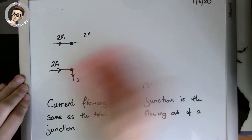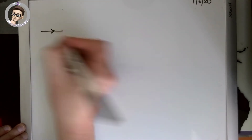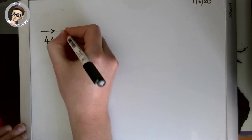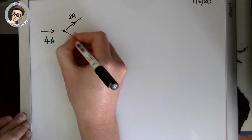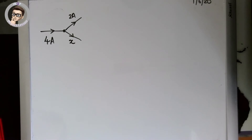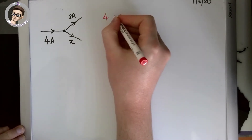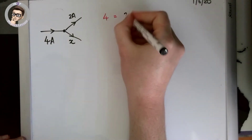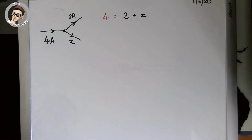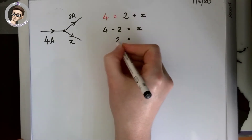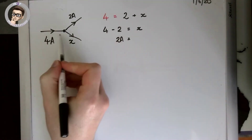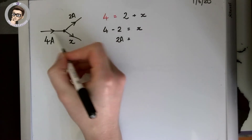Let's see an example question we could expect in our exams. I've got four amps flowing into my junction and two amps flowing out in one direction. Four going in must equal two flowing out plus X. Four minus two gives me X, which is two amps. So four flows in, two flows that way, leaving two to flow the other way.